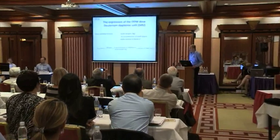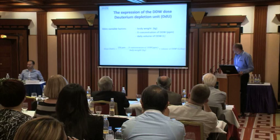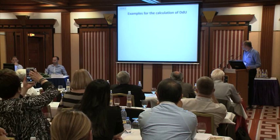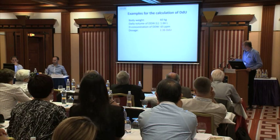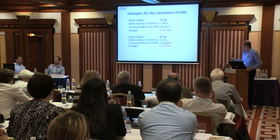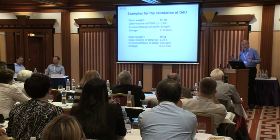How do we establish the optimal DDW dose? Several parameters influence this: body weight and consumed volume. Here is the formula: take 150 ppm minus the DDW concentration in ppm, multiply by the volume consumed, and divide by body weight to get a DD unit. For example, if body weight is 60 kg, the patient consumes 1.6 liters, and the deuterium concentration is 65 ppm, then DD unit = 2.3. But if body weight is higher, volume smaller, and ppm higher, the dosage could be only 0.7 DD units.